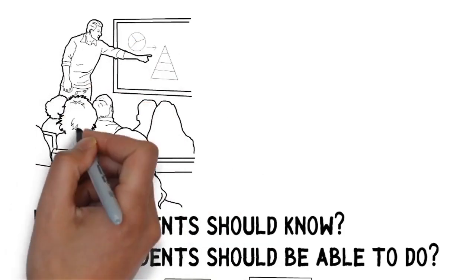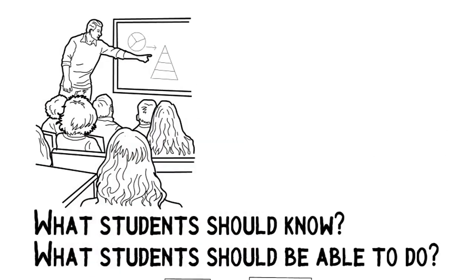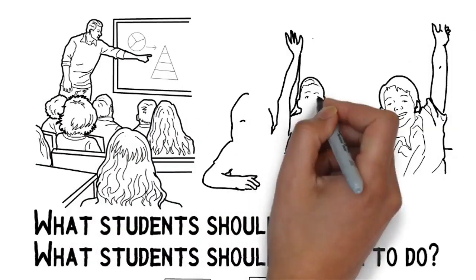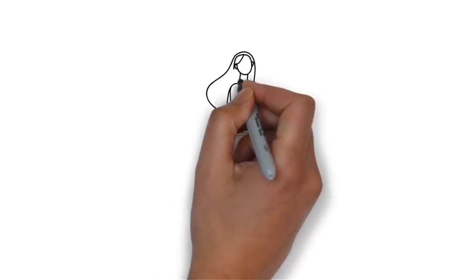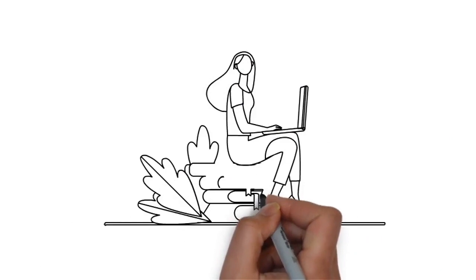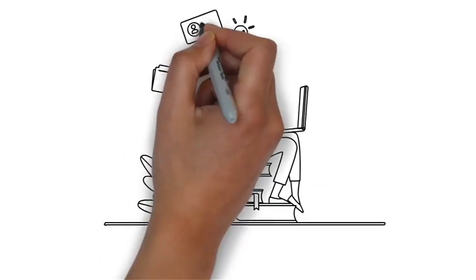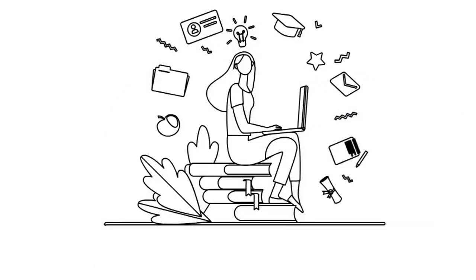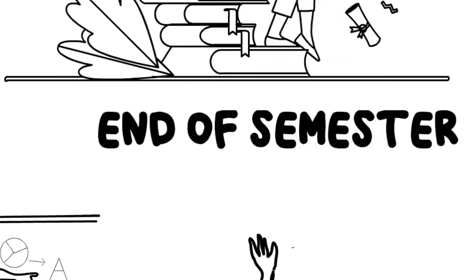A good intended learning outcome shouldn't be too abstract, too narrow, or be restricted to lower-level cognitive skills. Each individual intended learning outcome should support the overarching goal of the course, that is, the thread that unites all the topics that will be covered and all the skills students should have mastered by the end of the semester.